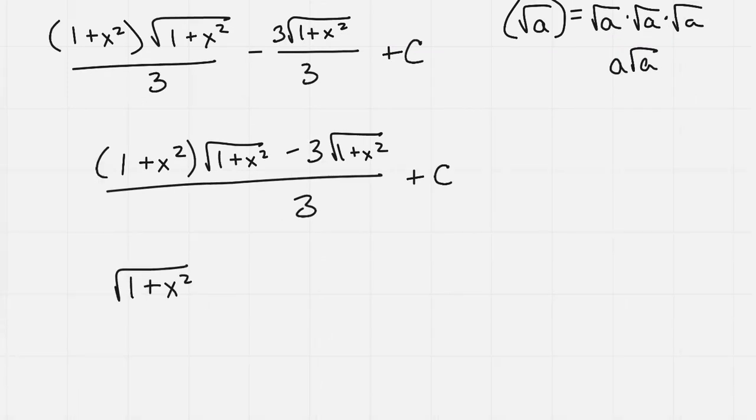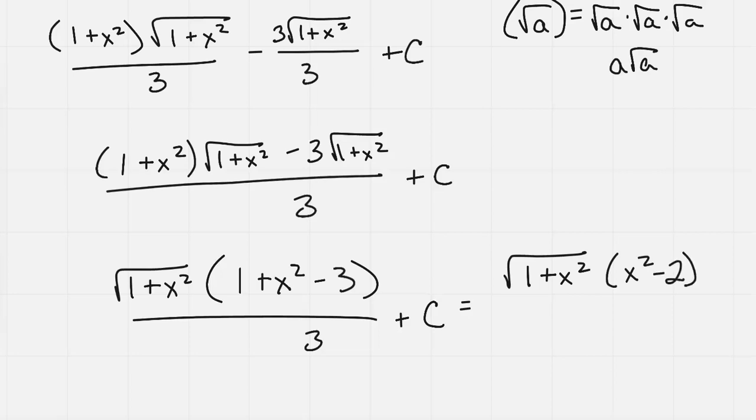We get 1 plus x squared times the quantity square root of 1 plus x squared minus 3 times the square root of 1 plus x squared all over 3 plus c. If I simplify the inside of the parentheses, the whole thing becomes square root of 1 plus x squared times the quantity x squared minus 2. And that's all plus c. Then I get my final answer.